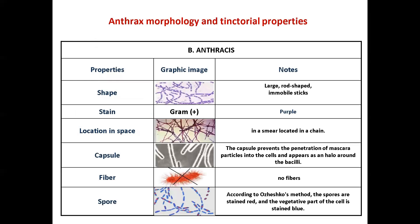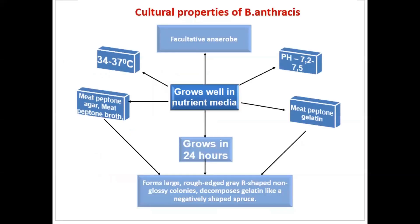Bacillus anthracis: its shape is large, short-edged, immobile rods, gram-positive, arranged in a row on the side. The capsule prevents foreign particles from entering the cells and therefore appears as a halo around the bacilli. Without fibers, spores are stained red by Ajeska's method and the vegetative part of the cell is stained blue. The anthrax microbe belongs to facultative anaerobes, with an optimum cultivation temperature of 34–37°C and pH 7.2–7.5. The causative agent grows well on simple nutrient media including mid-peptone agar, mid-peptone broth, and gelatin.